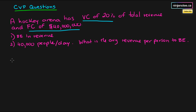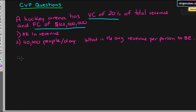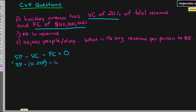If you remember our equation: sales minus variable costs minus fixed costs is equal to zero. Let's start plugging in things. We have sales minus — we can rewrite variable costs as 20% of sales or total revenue — so we say minus 0.2 SP, minus $40 million for our fixed costs, equals zero.